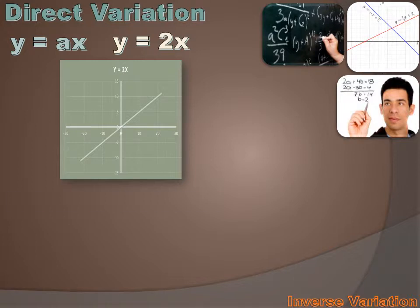Well, what's an inverse variation? Instead of y equals ax, an inverse variation is of the form y equals a divided by x. And hopefully you can see that in a direct variation, as x gets larger, y gets larger. Because if we multiply a times a larger value for x, our y is going to be a greater value. But in an inverse variation, as x gets bigger, y gets smaller.